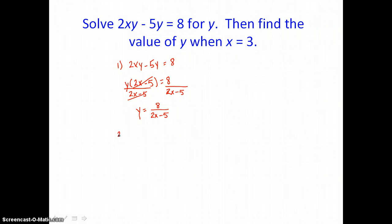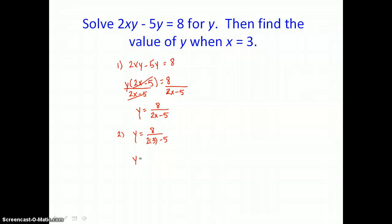Second part of this problem is to now let x equal 3 and solve for y. So in for x, we'll substitute 3. And we'll simplify. So we have 8 in the numerator, and in the denominator we have 2 times 3, which is 6. 6 minus 5 is 1, and 8 divided by 1 is 8. So when x equals 3, y equals 8.